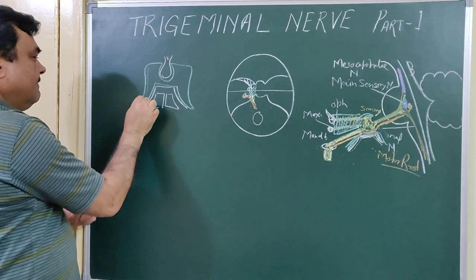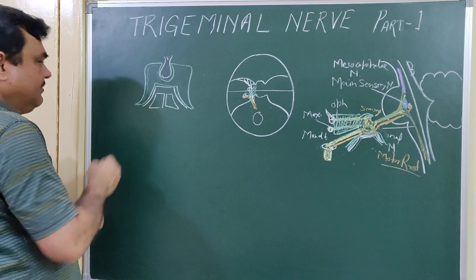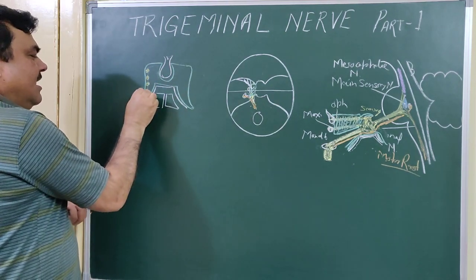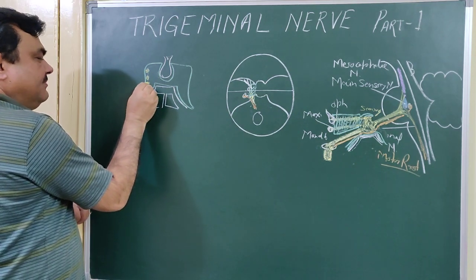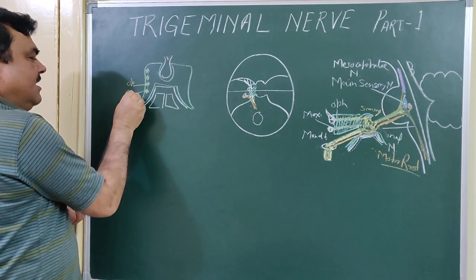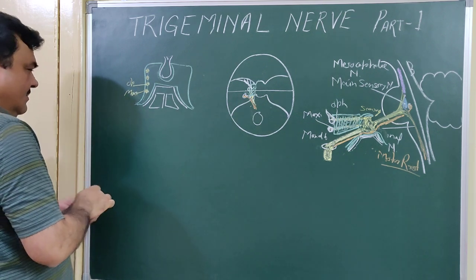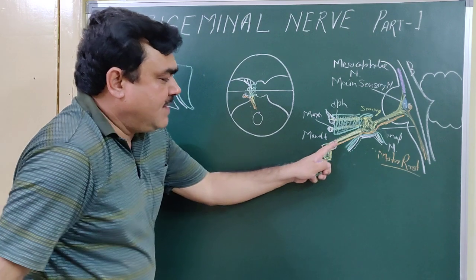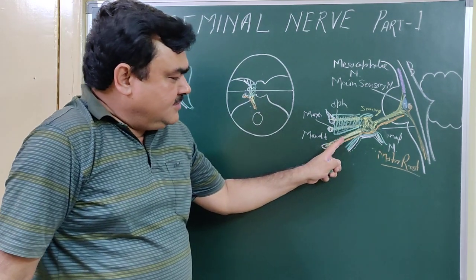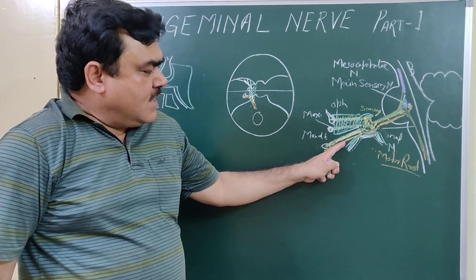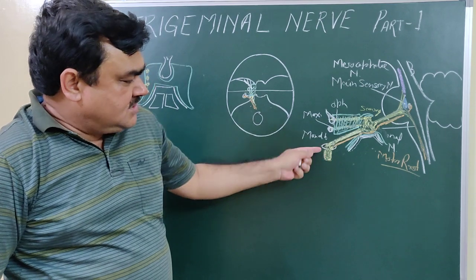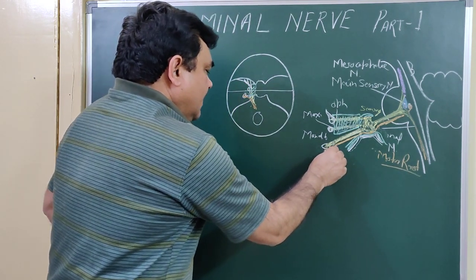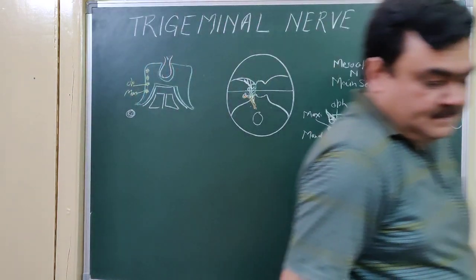In a transverse section at the level of the cavernous sinus, you will find: this is the cavernous sinus, here is the third cranial nerve, the fourth cranial nerve, the ophthalmic division of the Trigeminal, and also the maxillary division of the Trigeminal. The mandibular division passes through foramen ovale. Just below the foramen ovale, the sensory and motor components join to form the mandibular nerve. So this is Part 1.